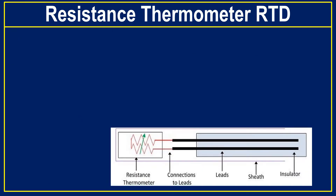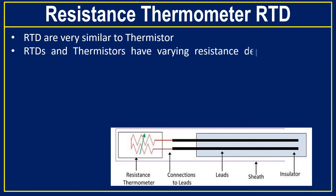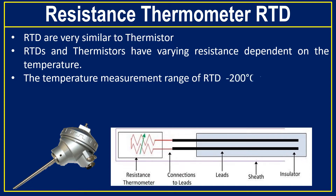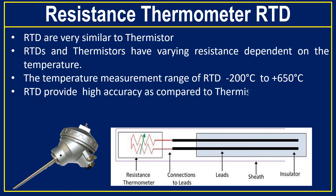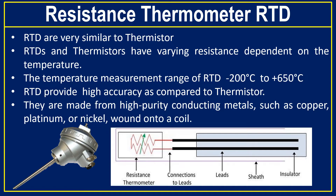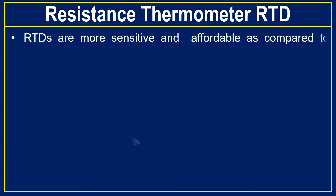Resistance thermometers, or RTDs, are very similar to thermistors. Both RTDs and thermistors have varying resistance dependent on temperature. The temperature measurement range of an RTD is minus 200 degrees centigrade to 650 degrees centigrade. RTDs provide high accuracy compared to thermistors. They are made from high purity conducting metals such as copper, platinum, or nickel wound onto a coil. RTDs are more sensitive and affordable compared to thermistors and thermocouples.